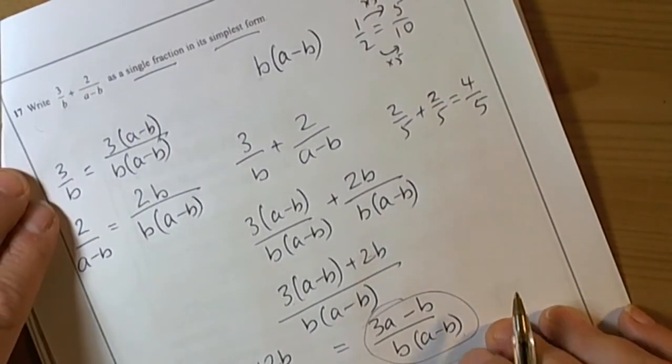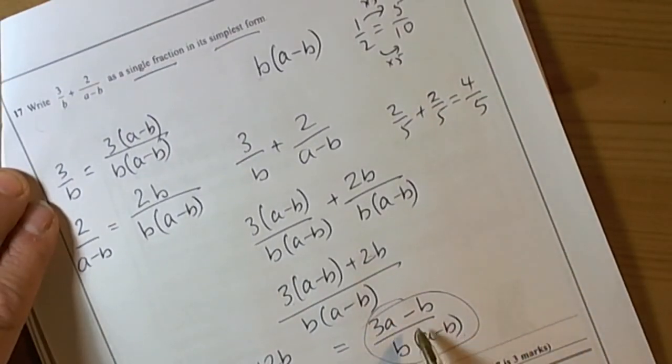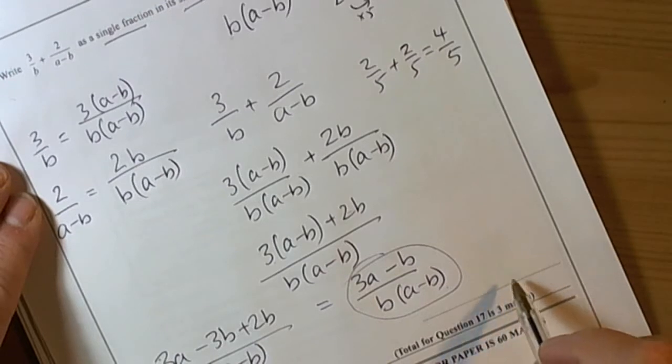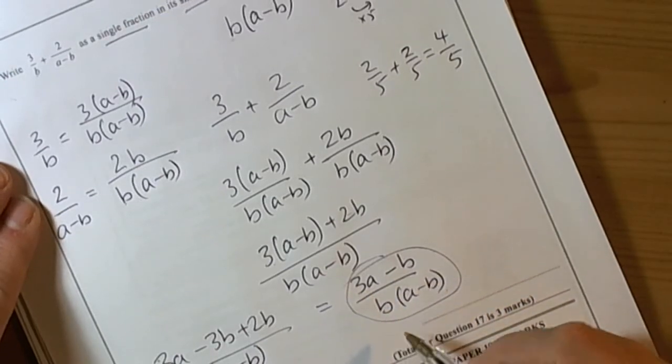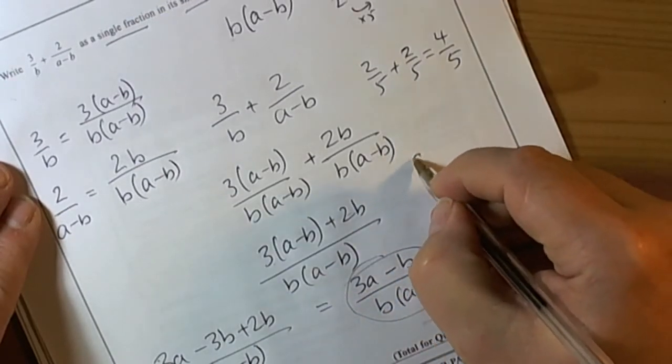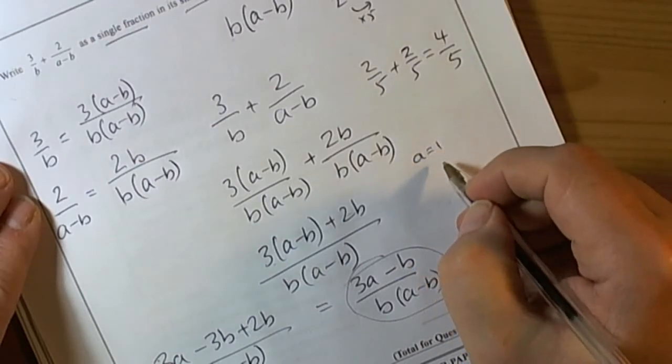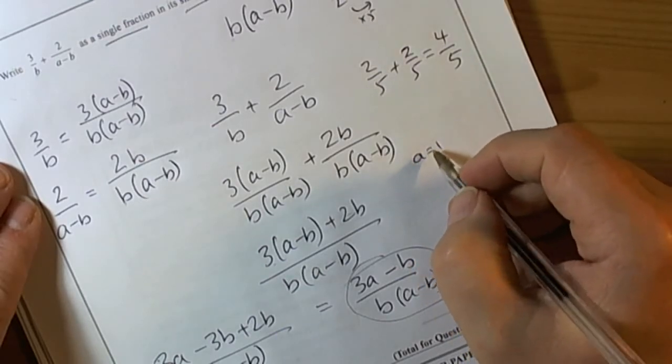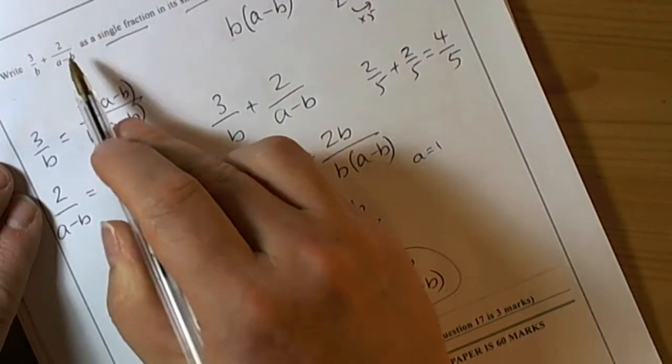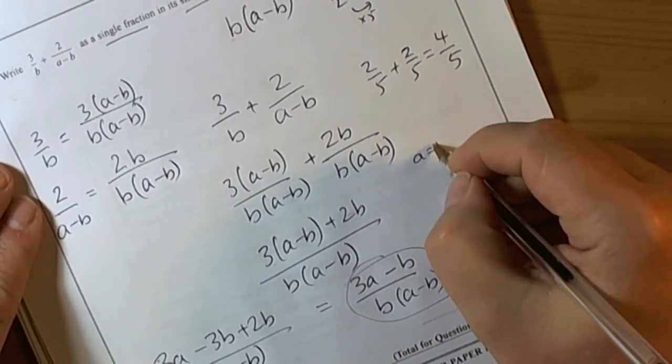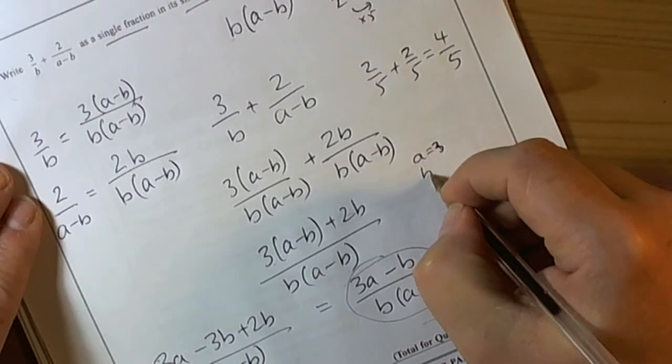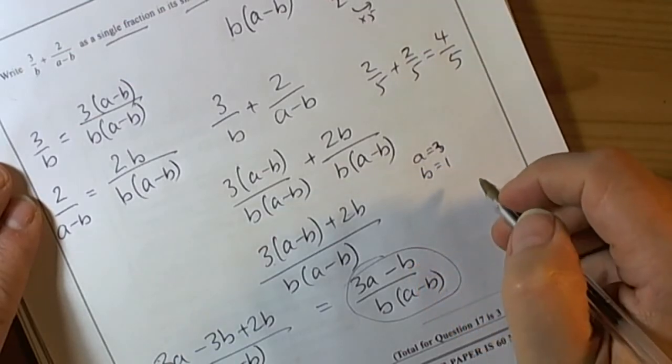We should check that this actually works. It's worth three marks, so we've got some time to spend in the exam to check it. If I look at the original fraction, a's got to be bigger than b because of the way they've written (a-b). So I'm going to let a equal 2 and b equal 1, just keep it simple.